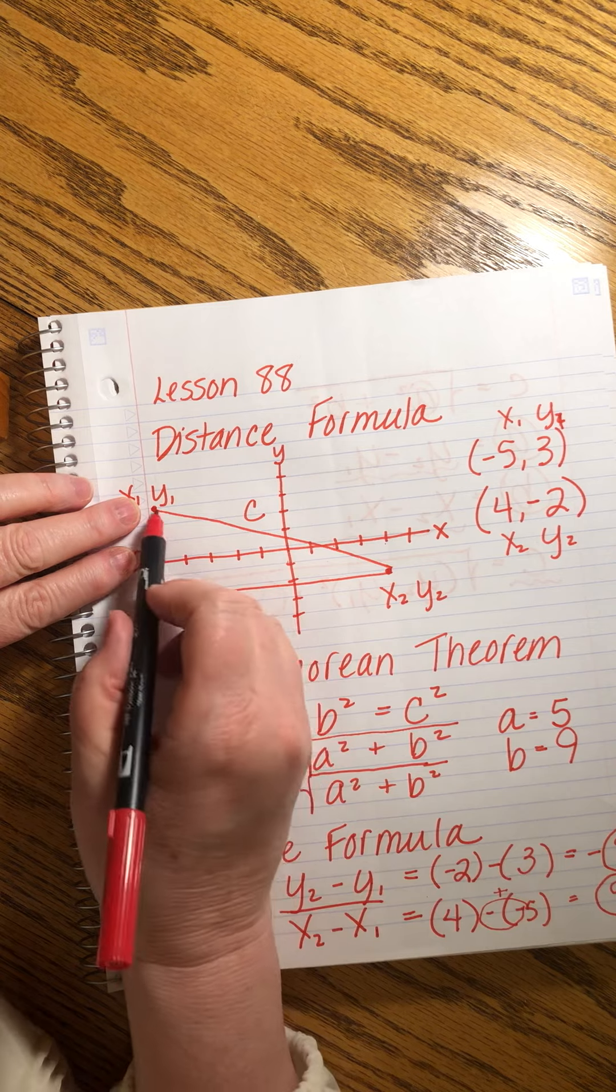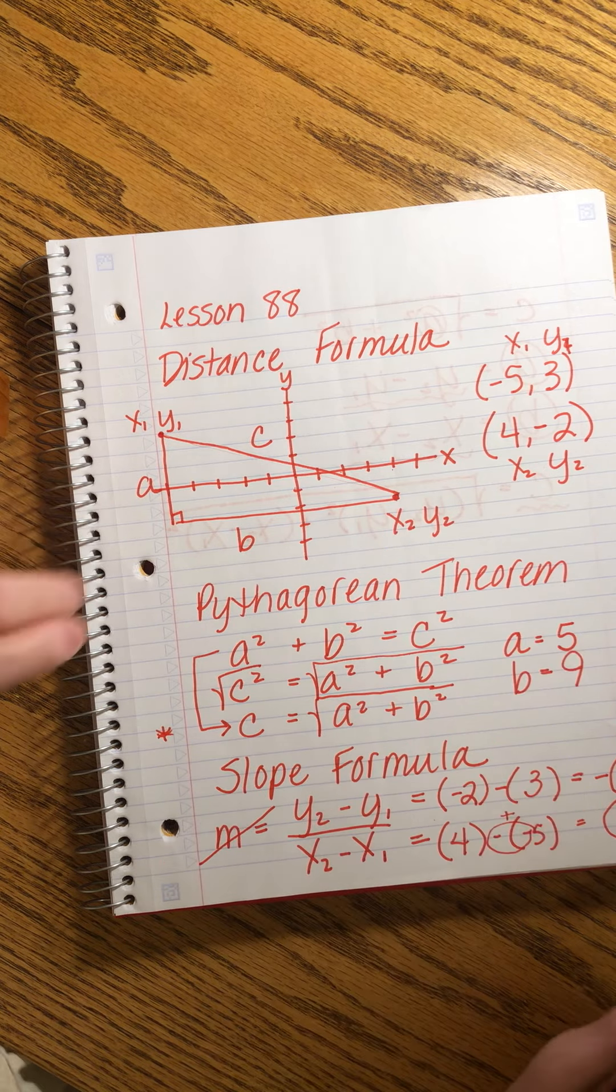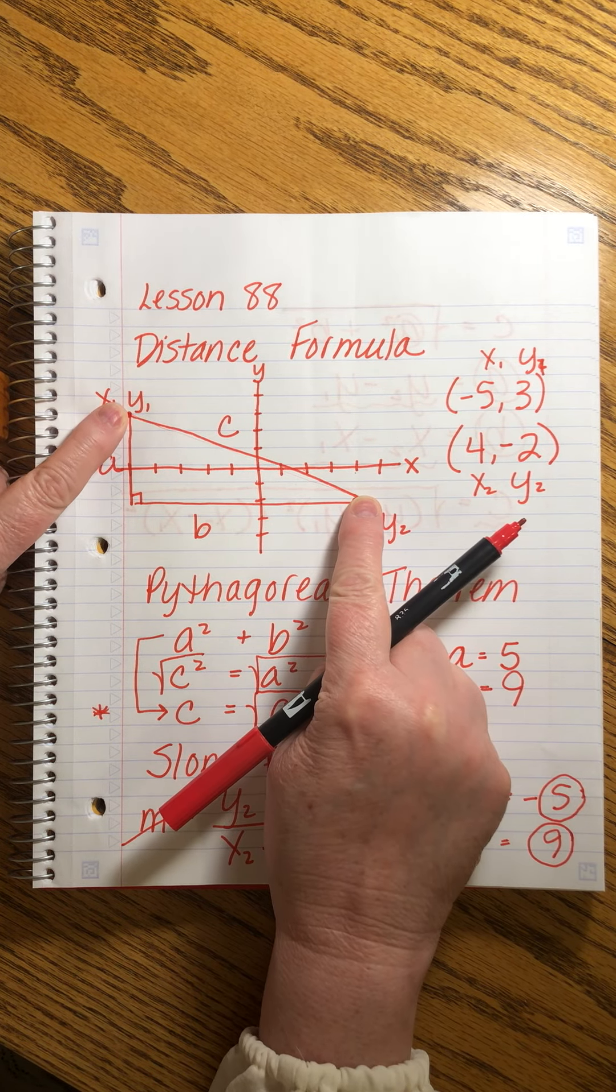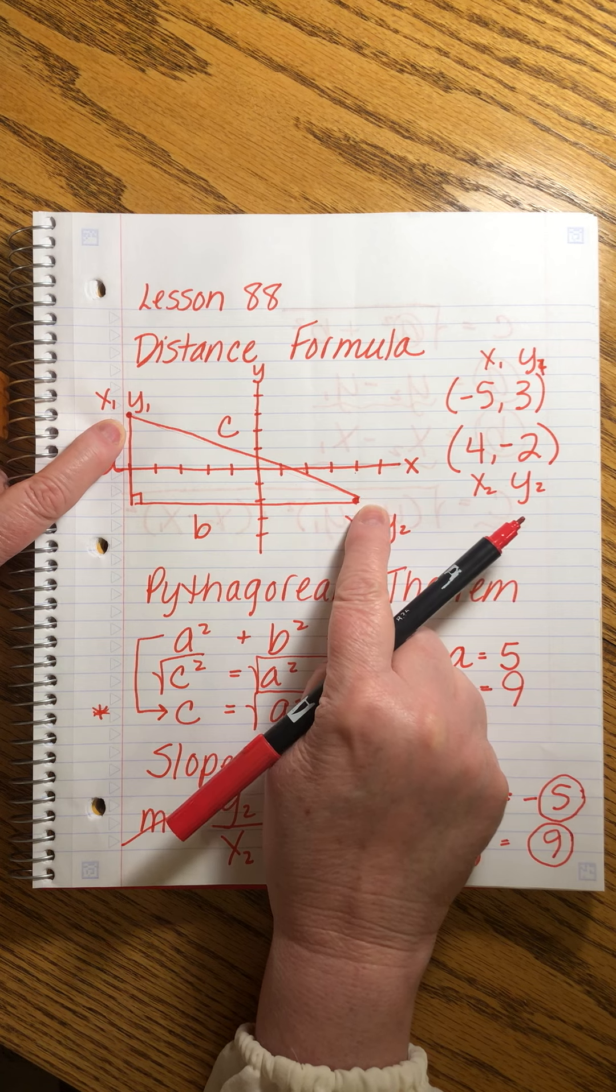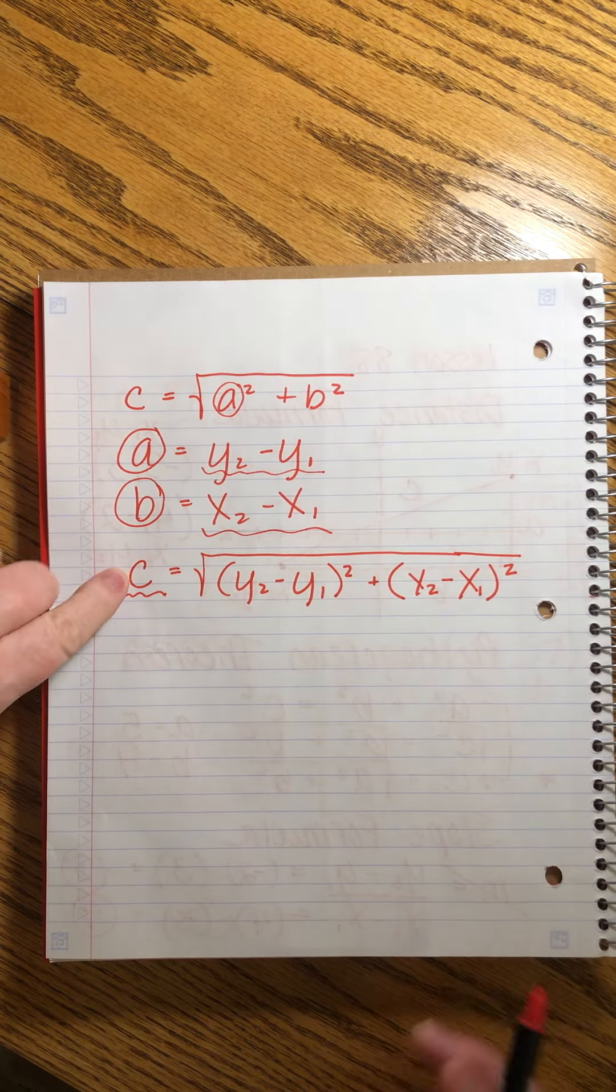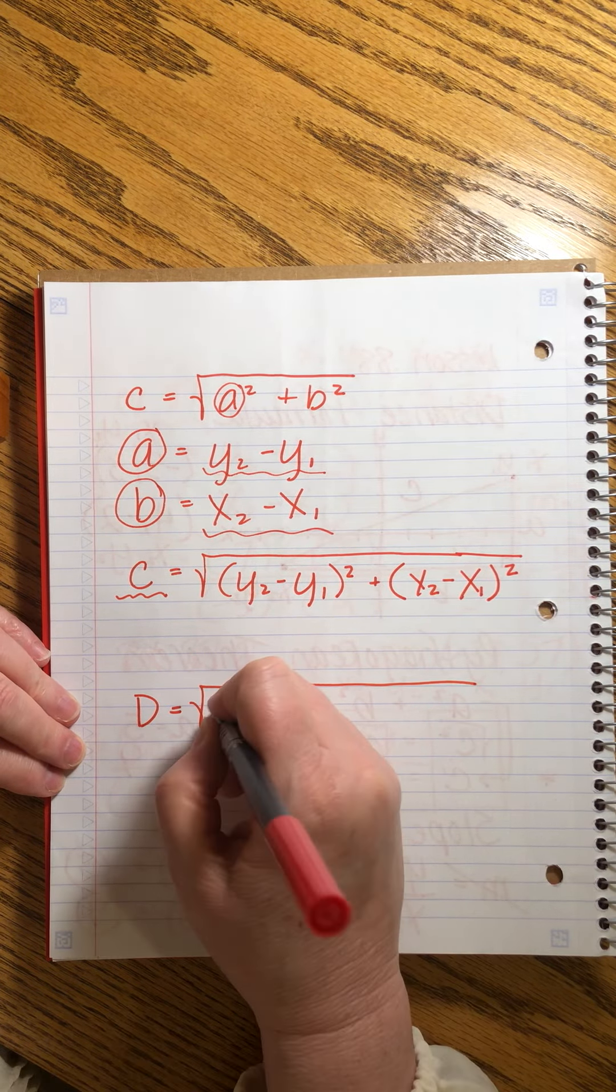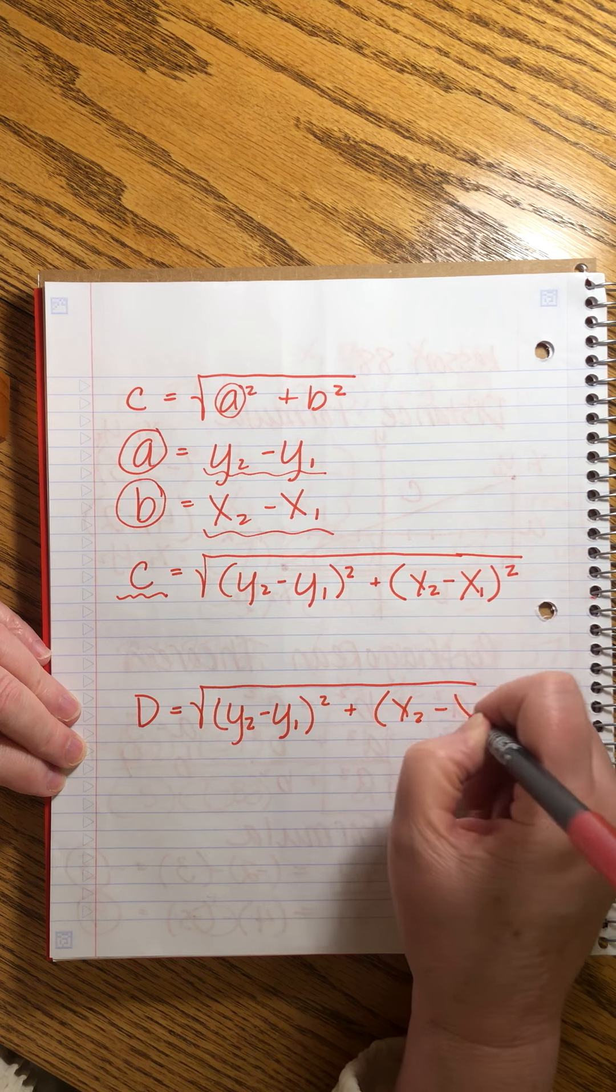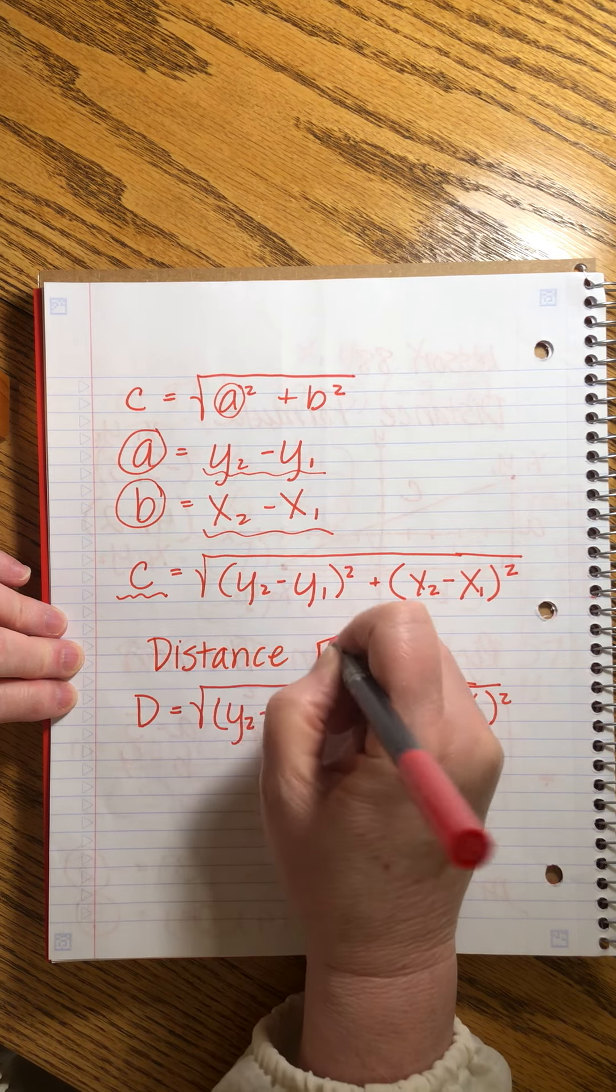The last thing I want to do is I want to change this expression. It's true. We can think of this distance c, this side c. We can think of that as the hypotenuse of the triangle. But we can also describe this side of the triangle as the distance between point x1, y1 and point x2, y2. So instead of calling it c, which is kind of a Pythagorean thing, we're going to call it d. I'm going to copy this down here. We're just changing the name of it.